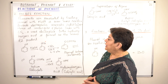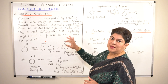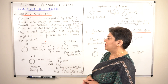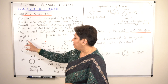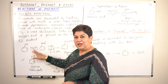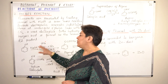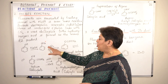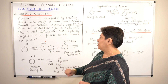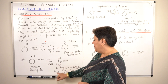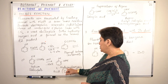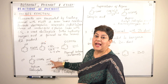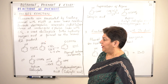So the main product formed as a result of Kolbe's reaction is 2-Hydroxy Benzoic Acid. In summary, Kolbe's reaction involves taking phenol, reacting it with sodium hydroxide to give sodium phenoxide, which on further reaction with Carbon Dioxide and hydrochloric acid gives the main product, 2-Hydroxy Benzoic Acid.